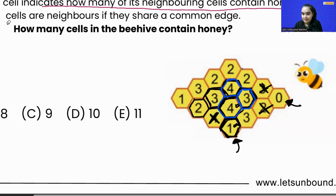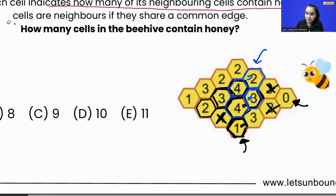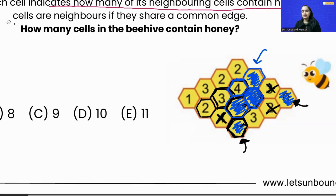Another neighbor can be this cell, and another one can be this cell, because they share a common edge. So number three is also sorted. If we check number two, it is also sorted because two of its neighboring cells will be this four and number three. So far we have fixed the locations of these cells that will contain honey.